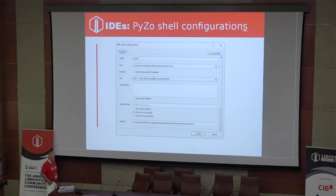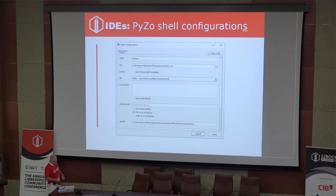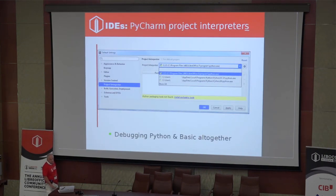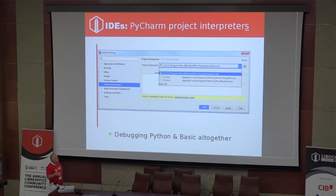That's for PyZo. PyZo proposes a menu called Shell Configurations where you would get something similar — it's up to you to say, instead of Python as a name, that it's your LibreOffice v5.2 or v6.4 you want to look at and see if your piece of script is running properly. Same thing for PyCharm — it proposes a default Python setup and a Python setup for every project you define within the tool.